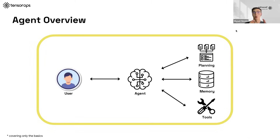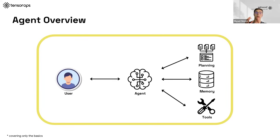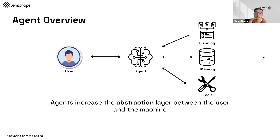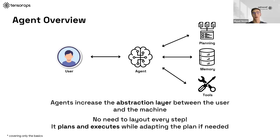I wanted to give an overview of the components of an agent. We have three main components. One of them, memory, you're probably already familiar with from chatbot applications. But the two main components that are key here are planning and tools. Planning is the ability to reason, plan ahead, and adapt the plan if needed. Tools are what allow the agent to interact with the environment and perform actions, such as calling an API or using a Python function. Agents increase the abstraction layer between the user and the machine — you just tell it your overall goal, and it finds the path and executes for you.